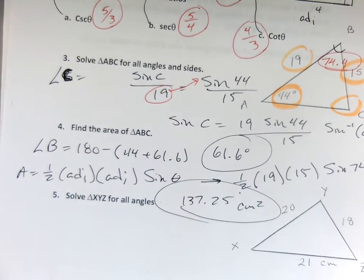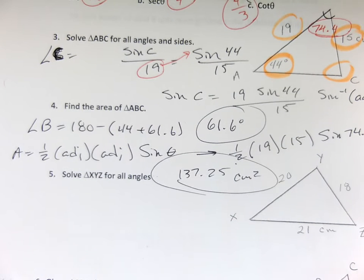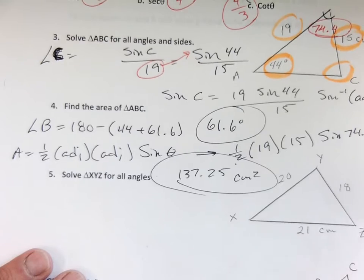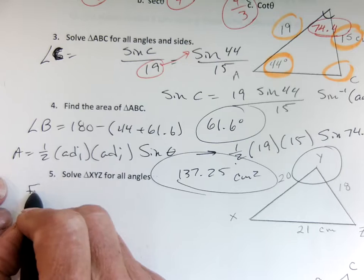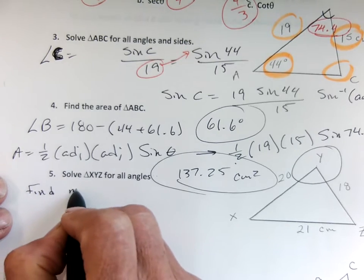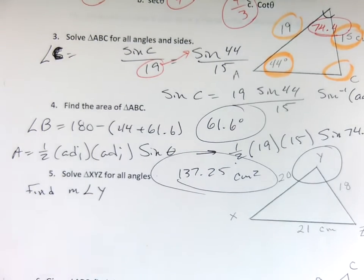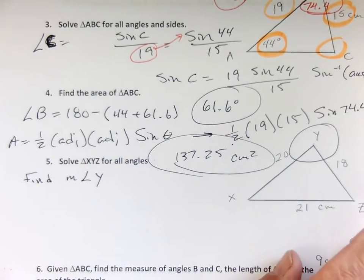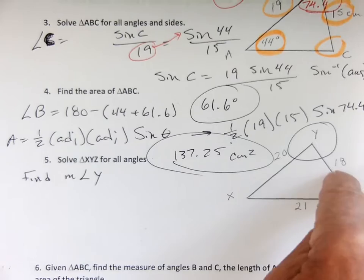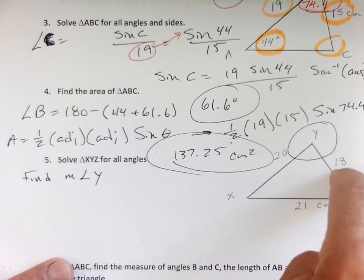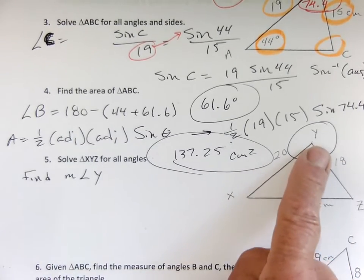On number 5, same thing. I'm not going to ask you to solve the entire triangle. Let's find the measure of angle Y. We do not have a pair of opposites. But if you look in your notes, there's a place where it says if you know side-side-side, you can find an angle by the law of cosines.